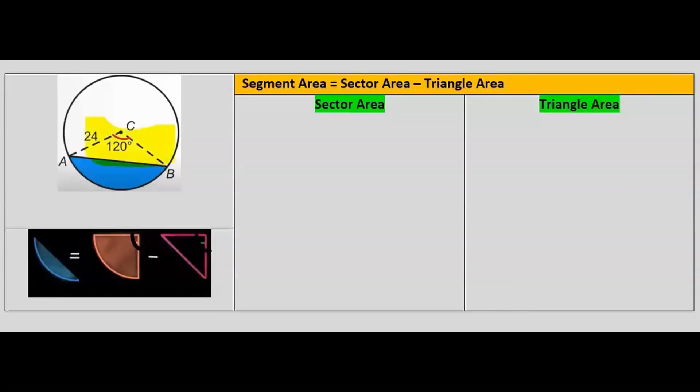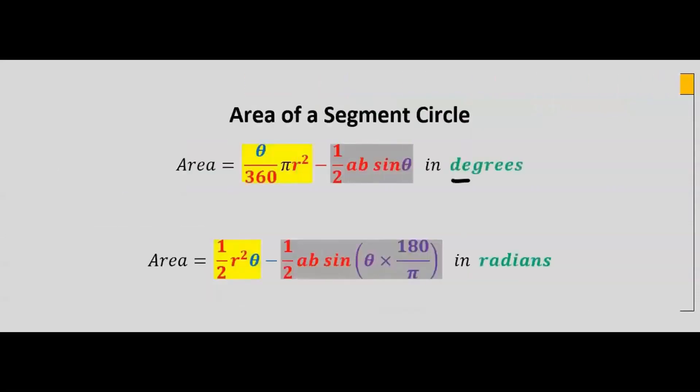The angle at the center is in degrees. Hence, we are going to use area of the sector minus area of the triangle.